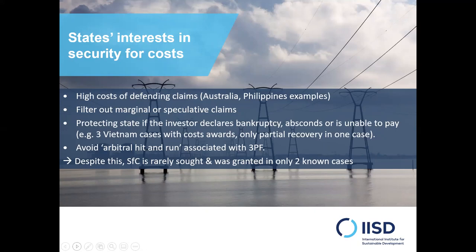So states are facing higher and higher costs when defending claims and are looking at ways of ensuring they can recoup those costs when they're successful. Another reason states are interested in security for costs is to potentially filter out claims that are more speculative or marginal, or that have been brought by a claimant just to try and extract settlement value from a state. The thinking is that a claimant would not want to post security for costs for a disingenuous or weak case, and would instead choose to abandon the claim — so there's a filtering-out effect.